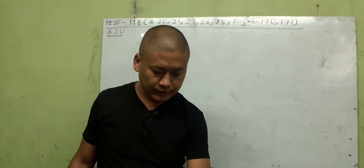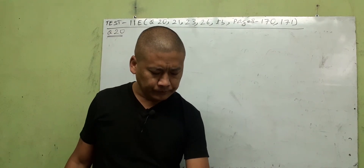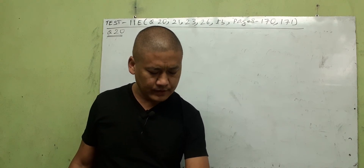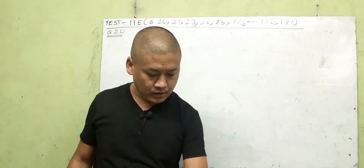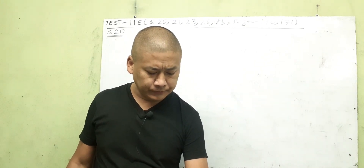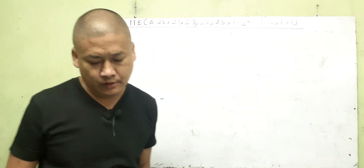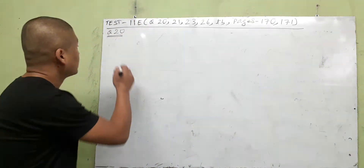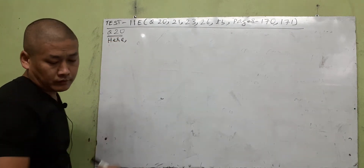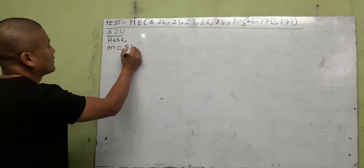A man climbs a ladder carrying a concrete block of mass 5 kg. The ladder makes an angle of 30 degrees to the vertical and is three meters long. We have to find the work done by the man on the block.